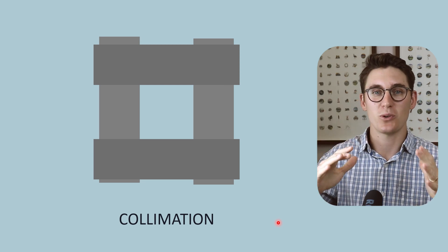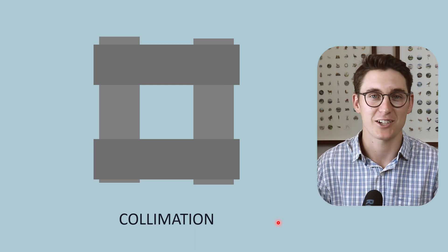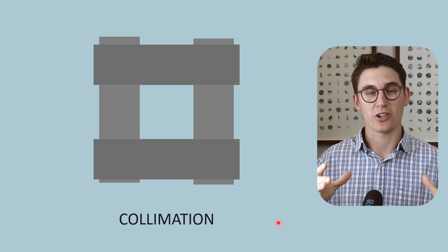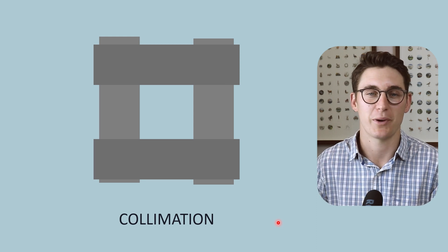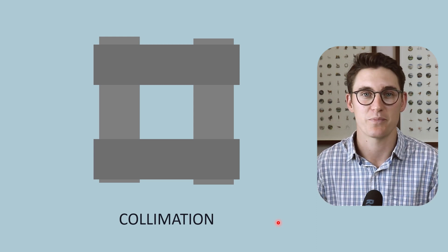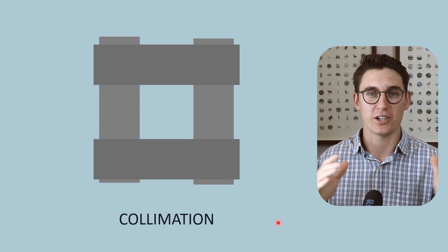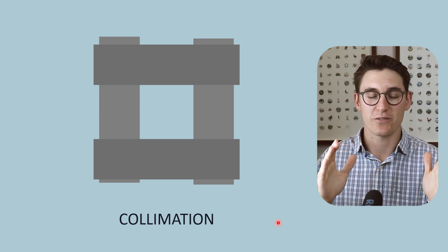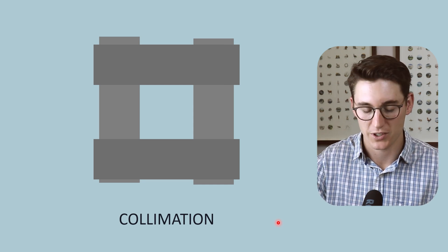So multiple things have happened to our x-ray beam and they still haven't yet reached our patient. Now this is the last concept we're going to touch on prior to x-rays finally reaching our patient, and it's what's known as collimation. Collimation is the removal of x-rays from our x-ray beam to allow only a specific portion of those x-rays to head towards our patient.